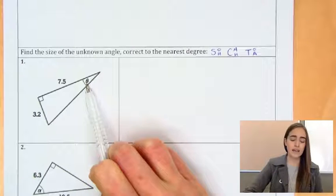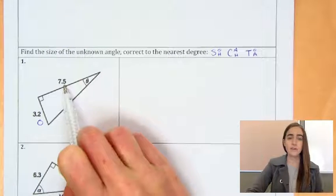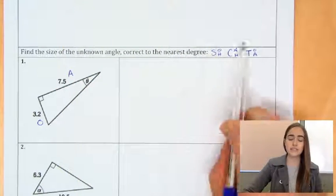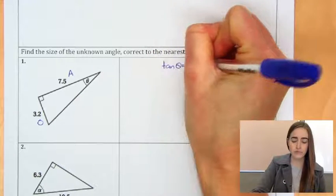Okay. So from this angle theta, 3.2 is our opposite, and our 7.5 is our adjacent. So opposite and adjacent is tan. So we're going to write tan theta equals O over A.